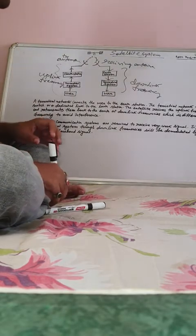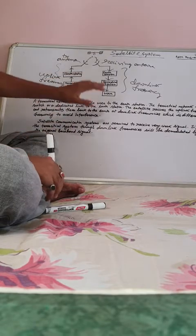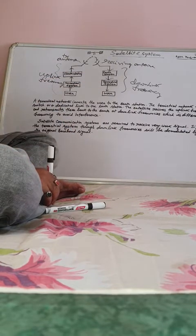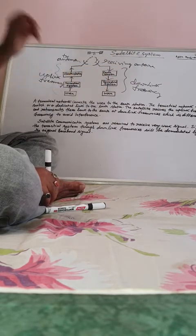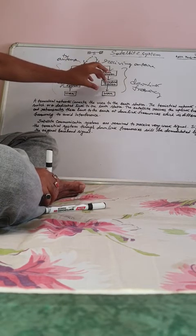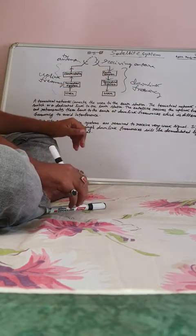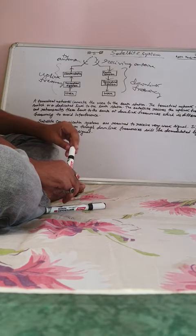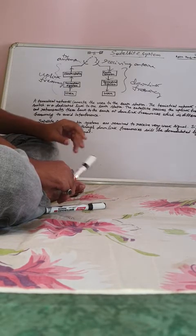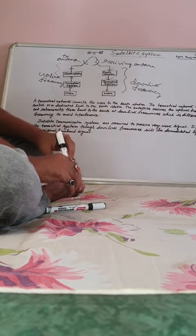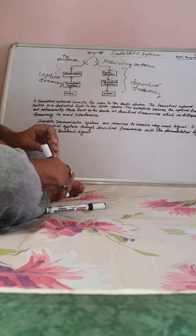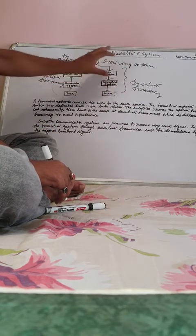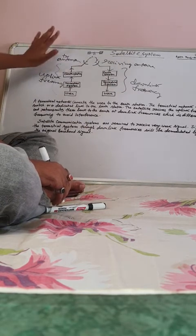Remember the downlink frequency block diagram — there is a demodulator at the end. The user demodulates the downlink frequency signal to retrieve back or recover the original baseband signal. In this way, the information sent by the user at an uplink frequency is recovered by the user at a downlink frequency, which is different from the uplink frequency so there will be no interference.